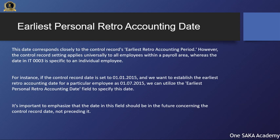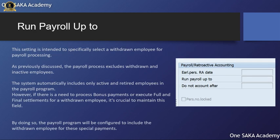Let us discuss about the 'Run Payroll Up To' field. This setting is intended to specifically select a withdrawn employee for payroll processing. As previously discussed, the payroll process excludes withdrawn and inactive employees. The system automatically includes only active and retired employees in the payroll program. However, if there is a need to process bonus payments or execute full and final settlements for a withdrawn employee, it's crucial to maintain this field. By doing so, the payroll program will be configured to include the withdrawn employee for these special payments.